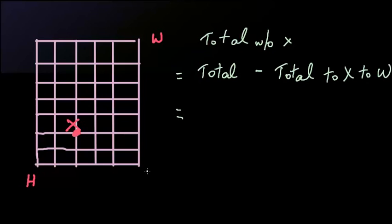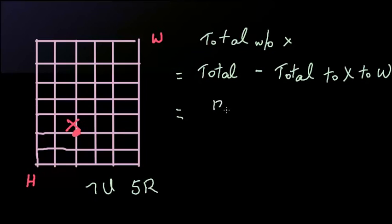What is the total number of ways to go from H to W? We have 7 ups and 5 rights, so 7 plus 5 is 12. The total number of ways from H to W is 12 factorial divided by 7 factorial divided by 5 factorial. We subtract the total number of ways to go through X: the number of ways from H to X, times the number of ways from X to W.